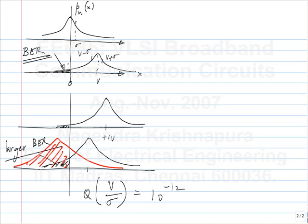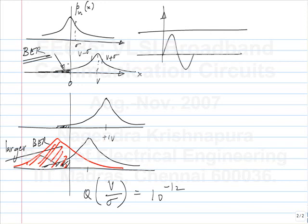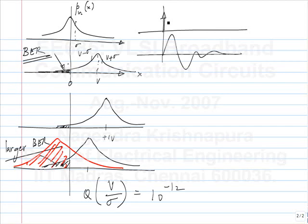So what can we do? Use the channel impulse response. How will we use it? What is the principle? I send an impulse and get something out of the filter. Why characterize it this way? You can think of any input as a sum of shifted impulses. Because it is a linear time invariant system, superposition holds, and time invariance means shifting also holds. So any input can be thought of as a summation of shifted and weighted impulses, and similarly the output will be shifted and weighted impulse responses.